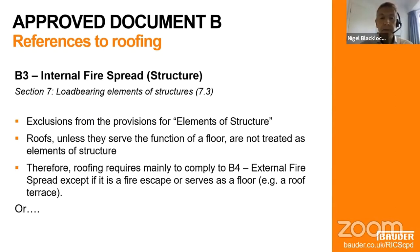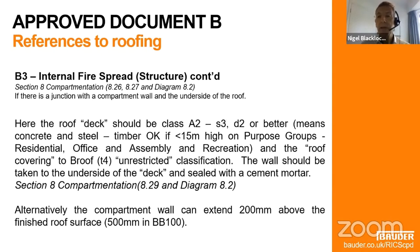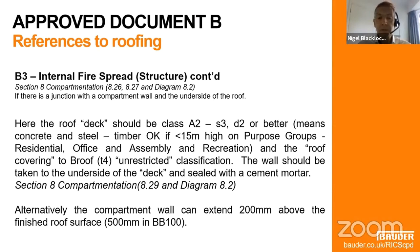The other part of B3 is an area that is commonly misunderstood and misinterpreted to the extent that MHCLG are currently looking to redraft it — not changing its meaning but making it clearer. This is the area where you have a roof flying over the top of a compartment wall. The first challenge is to know that you have a compartment wall there in existing buildings. If the deck is non-combustible, then a roofing system of B roof T4 is totally acceptable. But if it's a timber deck, as long as it's less than 15 metres and is a purpose group of residential, office, or assembly and recreation, then B roof T4 is also fine — and B roof T4 could include combustible insulation. That's the area that's commonly misunderstood.